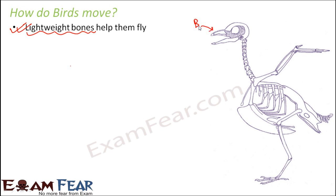Birds have a beak, which is a replacement for teeth and jaw. Because they do not have teeth or jaw, the number of bones has reduced. The beak is a lightweight structure that serves the purpose of both. Additionally, many bones inside the body of a bird are hollow.